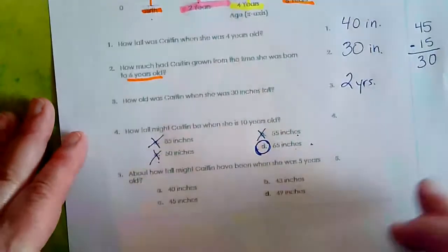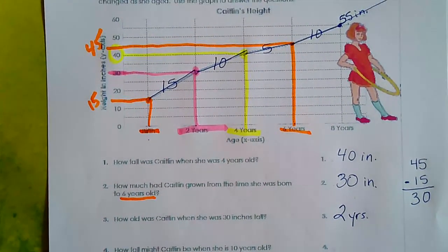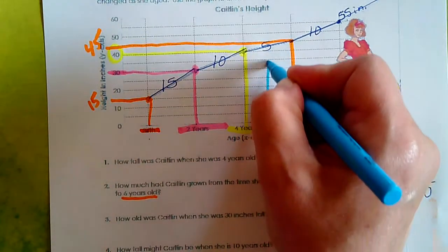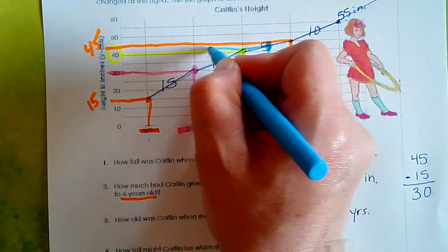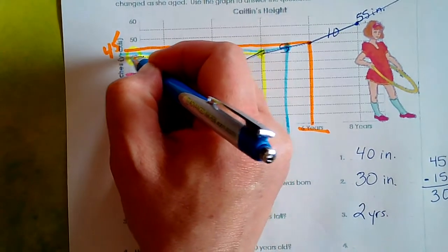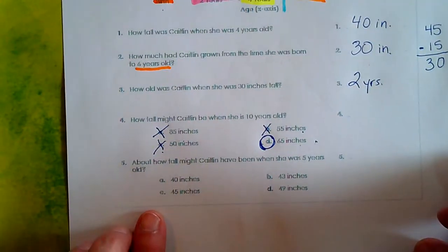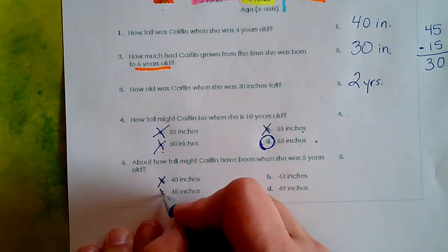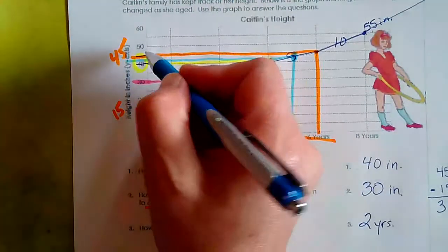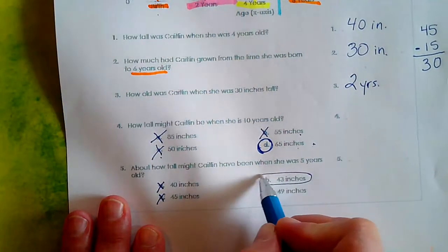All right. One last question about how tall might Caitlin have been when she was five. We can find that out real easy. Okay. We go up here. Five years would be right in between four and six. Okay. So what we're going to do is just follow this up until we reach our graph line and then follow it over and look closely and we can see that she was somewhere between 40 and 45 inches when she was five years old. So let's look at our answers down here. She was more than 40 inches, okay, and less than 45. So we can eliminate those two answers automatically. 49 inches is way up here, right at 50. So we know she wasn't 49 inches. So our answer is going to be 43 inches.